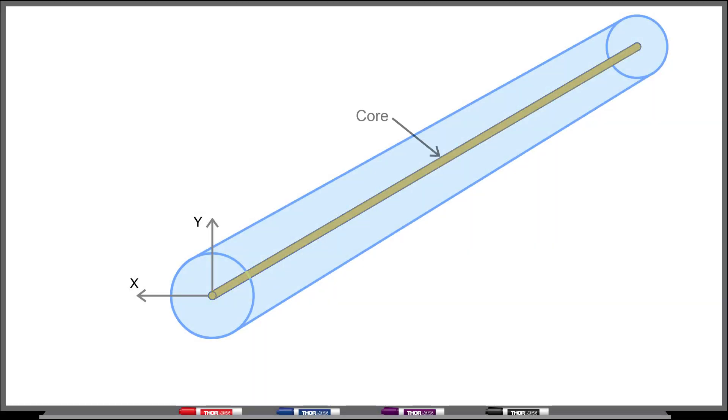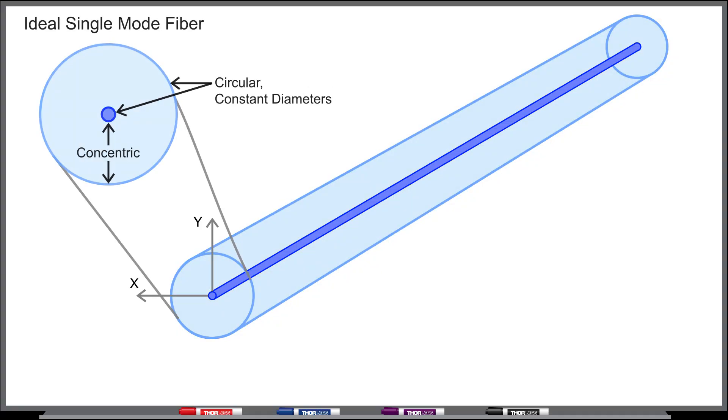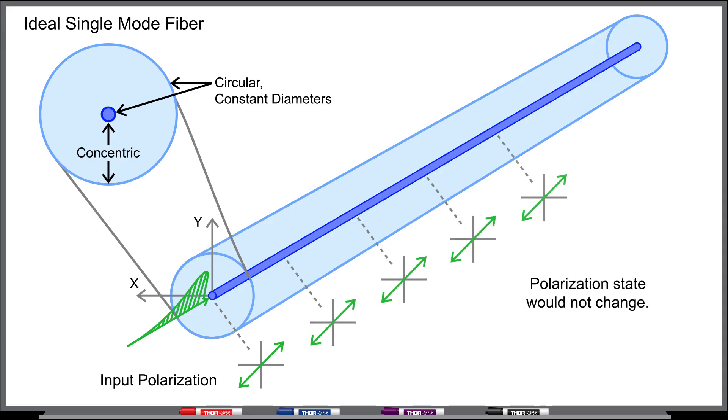Single-mode fiber is constructed with a core that is surrounded by a cladding. Ideally, the optical properties along the X and Y axes would be identical. If this were true, light coupled into the fiber with any polarization state would be output with the same polarization state.